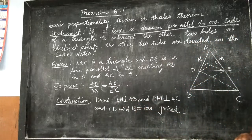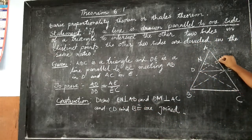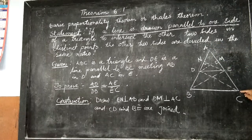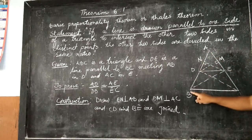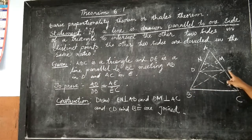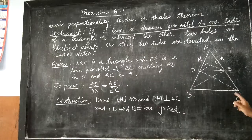To prove this, we need to construct DN perpendicular to AC and EN perpendicular to AD. Also, let us join BE and CD.